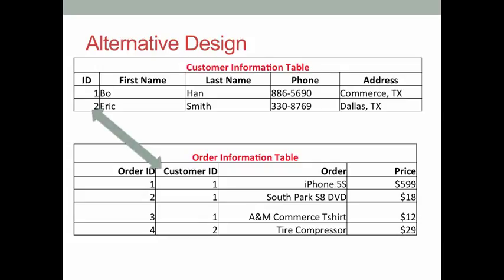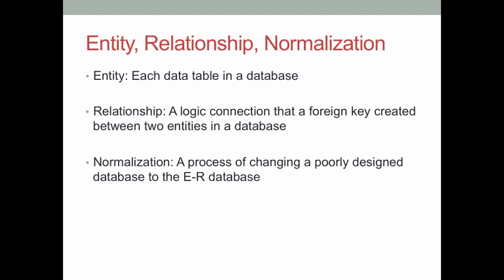Therefore, the function of a primary key is to help us find a unique data record. The function of a foreign key is to help us find a unique data record in another table and create the connection between two tables in a database. The process of using primary key and foreign key to design a database is called entity relationship database design. Each data table in a database is called an entity. A relationship is the logical connection that a foreign key creates between two tables — that's why we call it ER database design. The process of changing a poorly designed database into an ER database is called a normalization process.